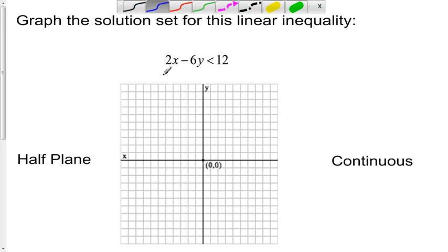So here is our linear inequality. For this example we have 2x minus 6y is less than 12. I'm going to begin by isolating y and placing this inequality into slope-intercept form.